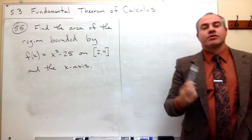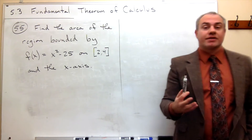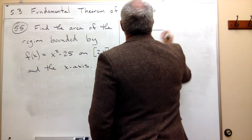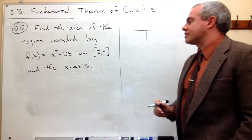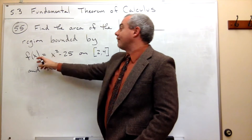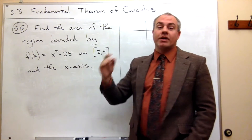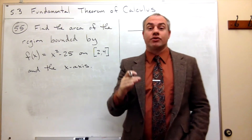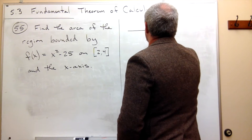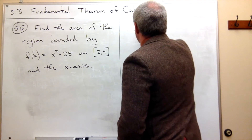First of all, maybe we want to get some sort of a feeling for what this looks like so we see what's going on. Here's my x and y-axis. f of x equals x squared is just a basic parabola, minus 25 is shifted down 25 units. So if we're down here at negative 25, then we get our parabola heading up.